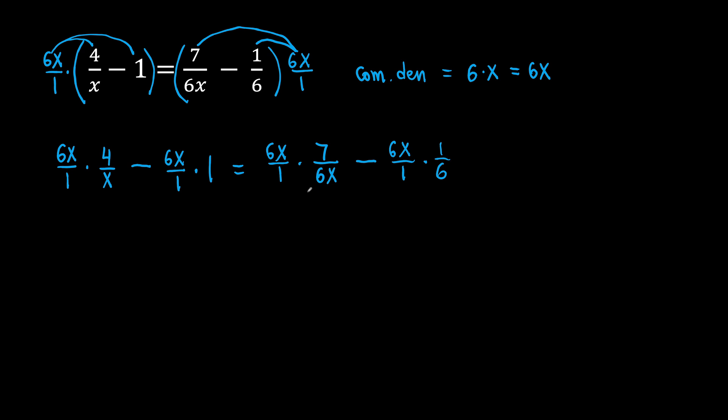Now let's get rid of all these denominators. We are not going to multiply across like 6x times 4. We are going to get rid of those denominators. Look, x divided by x is 1. So x will cancel out. Then what do we have? We have 6 times 4. So 6 times 4 is 24. Next, we have minus. 6x times 1 is just 6x.